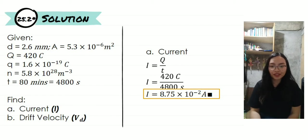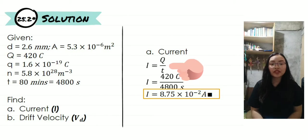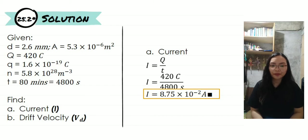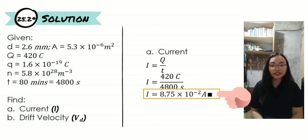We are asked to find two things. The first one is the current, and the second one is the drift velocity. In order to find the current, we need to use the equation I is equal to Q over T, wherein I is the current, Q is the charge, and T is the time. In this particular equation, our Q is equal to 420 coulombs all over 4,800 seconds, and thus our current is equal to 8.75 times 10 to the negative 2 ampere.